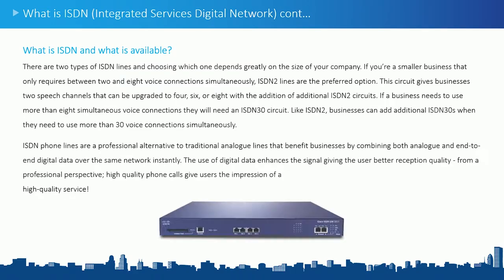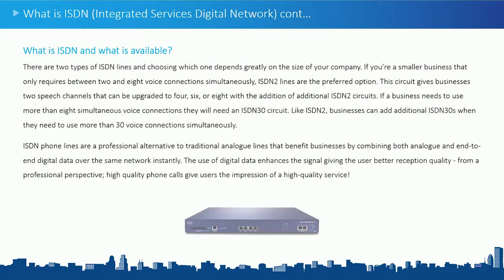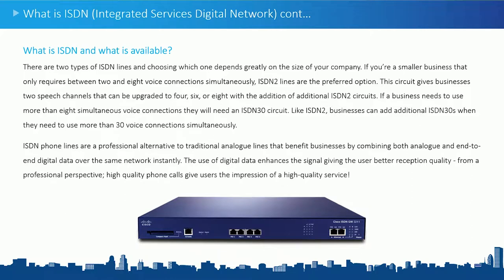There are two types of ISDN lines, depending on the size of your company. An ISDN2 allows up to two concurrent calls; an ISDN30 circuit allows up to 30 concurrent calls. With an ISDN30 you don't have to have all 30 channels active — you could have say 15 active. You can also have a single phone number routing to all 30 channels inbound, giving a more professional appearance. ISDN quality is very high, giving excellent call quality.